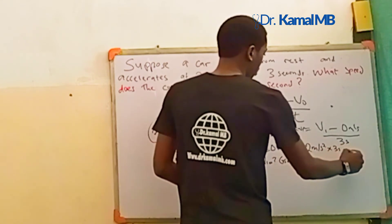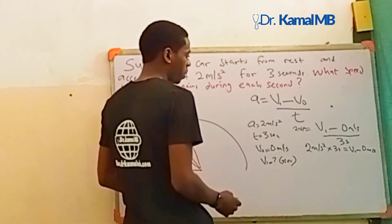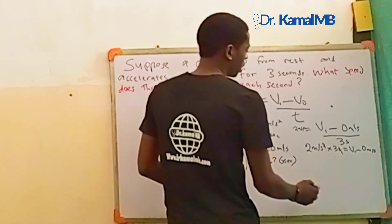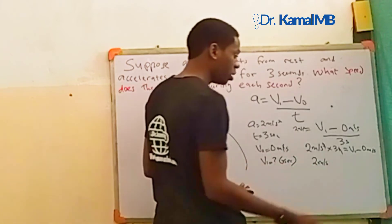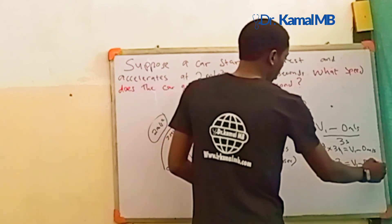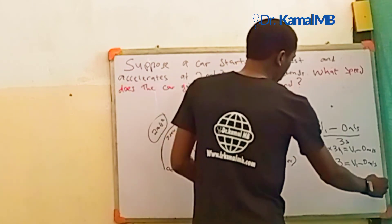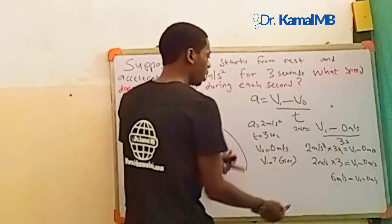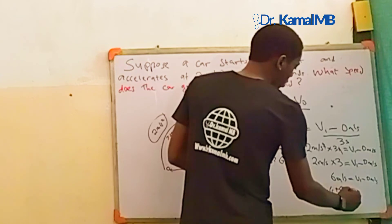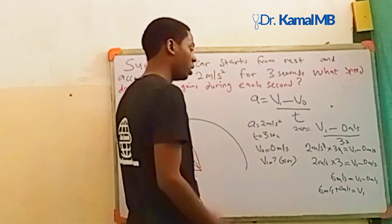So acceleration times 3 seconds equals V1 minus V0. Since V0 is zero, we have 2 meters per second squared times 3 seconds equals V1. Therefore V1 equals 6 meters per second.